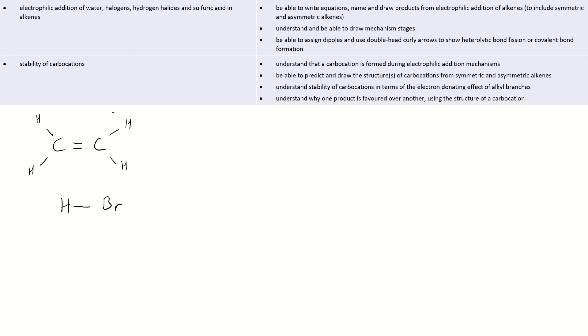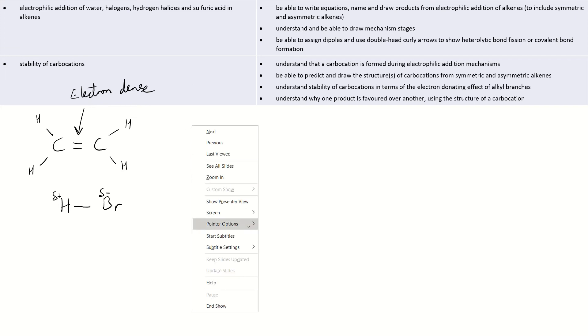For what's going to occur here: first off, this region is electron dense. I'll use black arrows for highlighting and red arrows for the actual movement of electrons. The double bond is electron dense, so it's attracted to electron-deficient regions. Looking at hydrogen and bromine, there's a difference in electronegativity — hydrogen is electron-deficient and bromine is electron-rich, as bromine has stronger electronegativity.